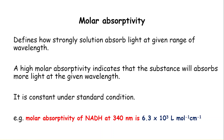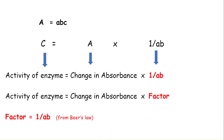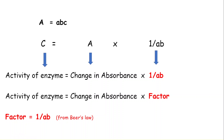After understanding molar absorptivity, let's return to Beer's law for factor calculation: A = a·B·C. When we rearrange and bring C to the left, we get C equals A multiplied by 1/(a·B). In the case of an enzyme, C can be referred to as the activity of the enzyme. A is the change in absorbance, and the remaining term 1/(a·B) is considered the factor.